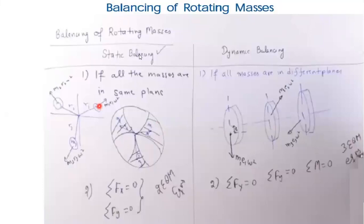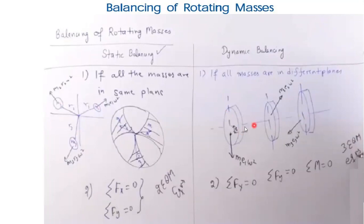We will be having two different types of balancing: one will be static balancing and another dynamic balancing. In static balancing, all the masses will be acting in the same plane. Whereas in dynamic balancing, we will be having masses which are in three different planes. This is the basic difference between static and dynamic balancing.